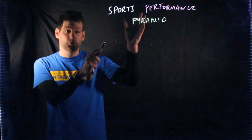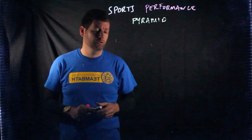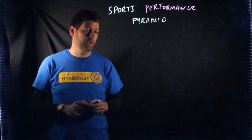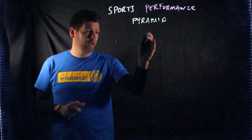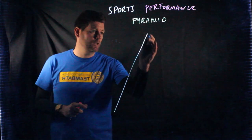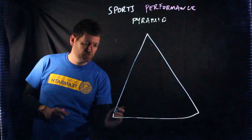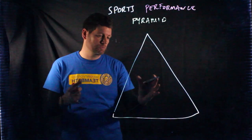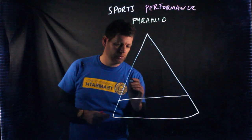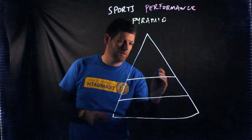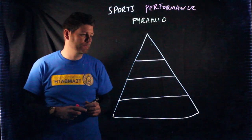Today we're going to look at the sports performance pyramid, which is a big part of GCSE but you also need to know at year 9 and A level, so it never goes away. Like all pyramids it looks like this — we're going to draw a nice big pyramid. There are four levels or four tiers to this pyramid.